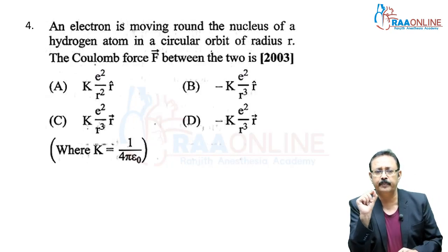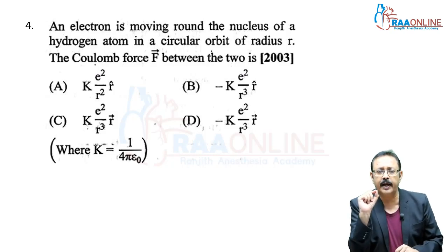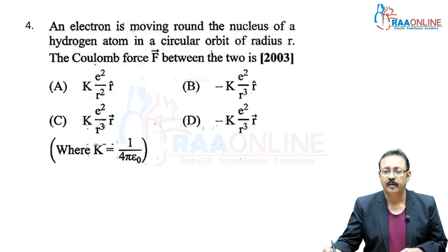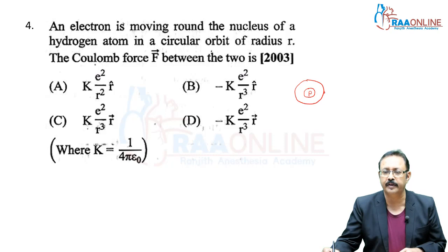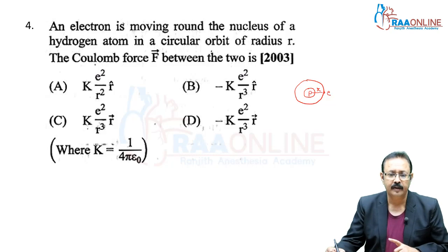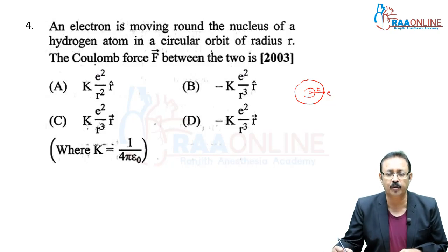Next, from 2003 AIPMT: an electron is moving around the nucleus of a hydrogen atom in a circular orbit of radius R. What is the Coulomb force F between the two? In a hydrogen atom, the nucleus has one proton, and the electron is in orbit. The force is attractive, so we use a minus sign — either option D or B should be the answer.